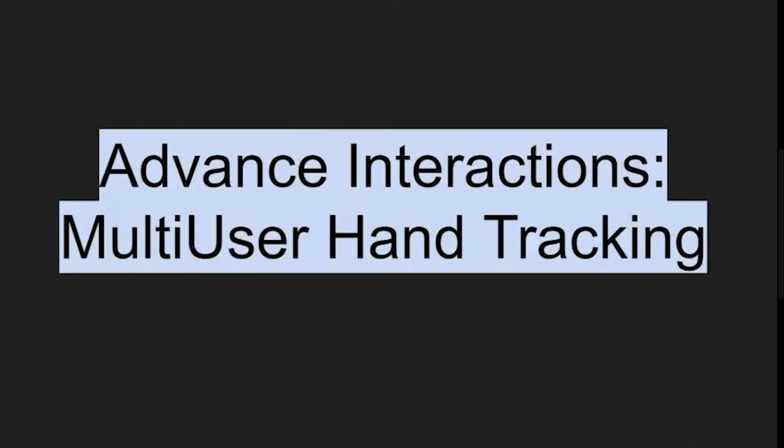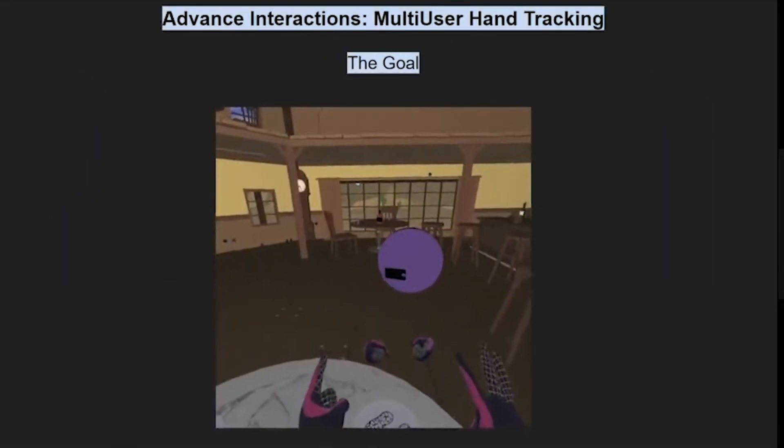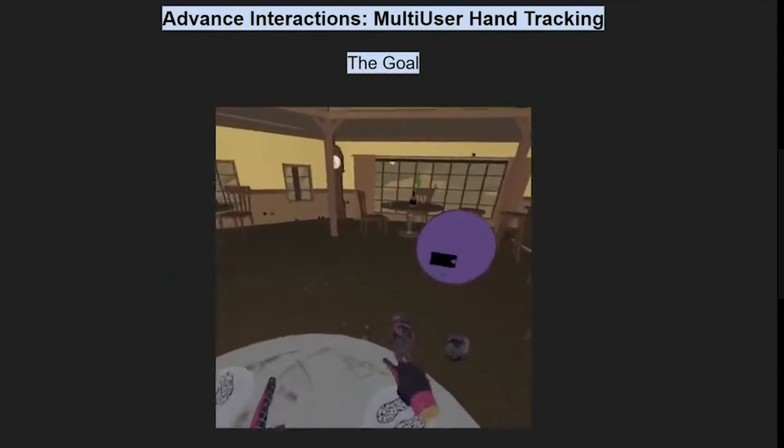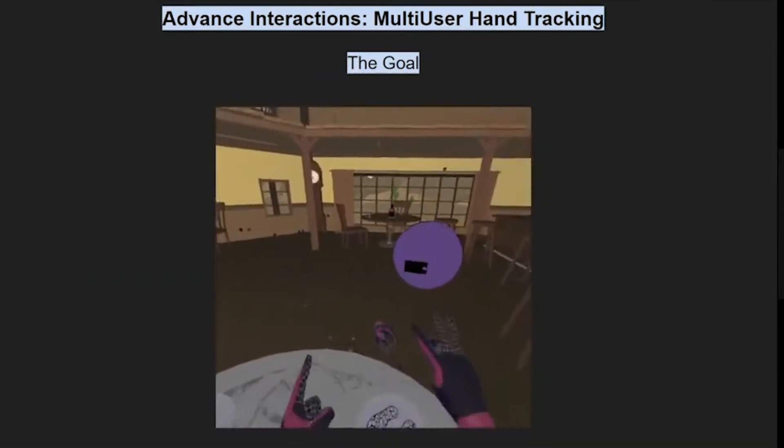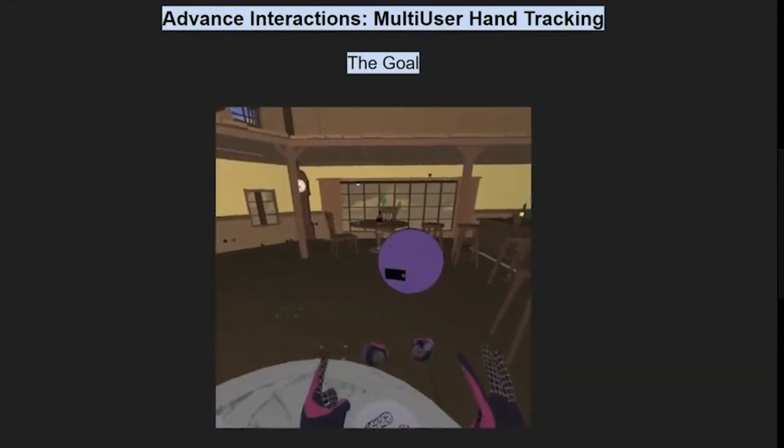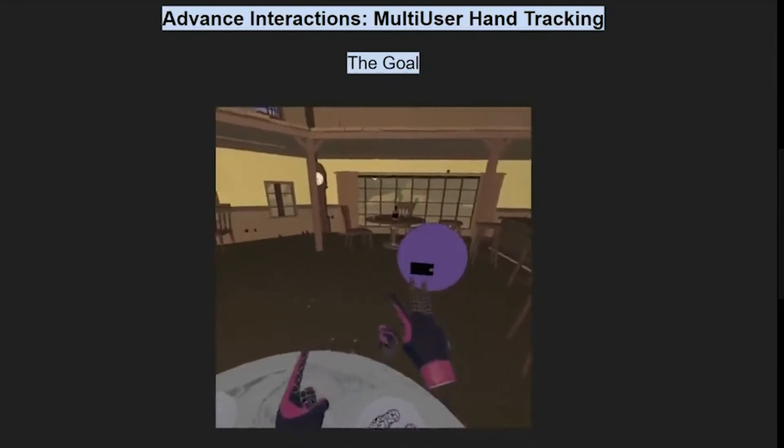We're going to get to the multi-user hand tracking. This is your goal - this is what you want to do. You want to have multiple people being able to see the hands of the other person, being able to see your hand, and then being able to interact with each other's hands.